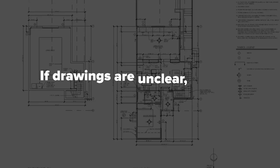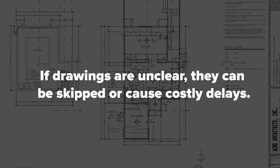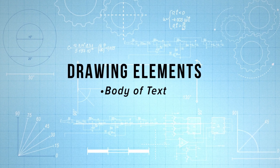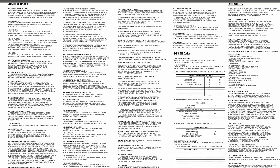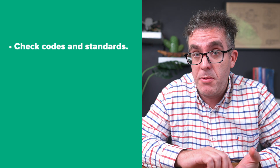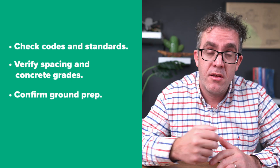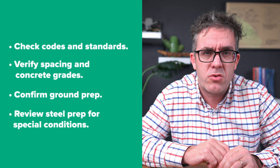If codes are hard or unclear to read, elements potentially won't get built, get skipped, or lead to costly delays. A lot of people will overlook big bodies of text, and yet structural drawings often start with exactly that. These general notes are not fine print to skip — they document how structures should be put together, the codes and standards, centres, spacing, concrete grades, ground prep, material preparation for steel in specialised conditions, and any other notes to make sure construction is built to code.